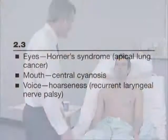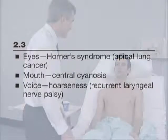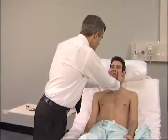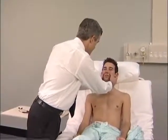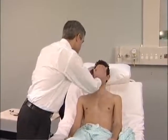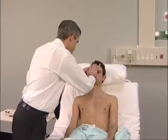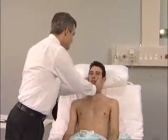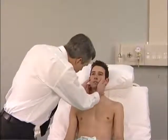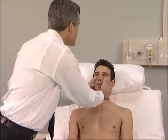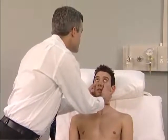Examination now moves to the face. Press the maxillary sinus for tenderness. Look carefully at the pupils and eyelids for ptosis — one eyelid is lower than the other — and for the presence of a smaller pupil on that side. This usually means Horner's syndrome, which can be caused by an apical lung tumour.